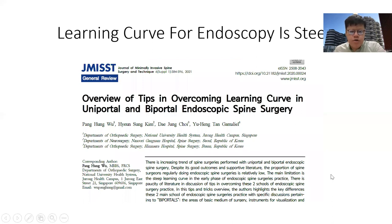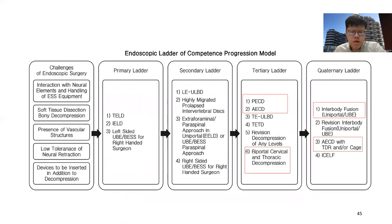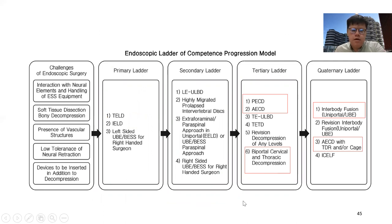There is a steep learning curve in uniportal and biportal endoscopic spine surgery, as described in our published article. Endoscopic cervical surgery is at the tertiary or quaternary ladder. We should be well-versed first with primary ladder surgery such as discectomy, very comfortable with decompression surgery, and possibly fusion before we proceed to cervical scope.